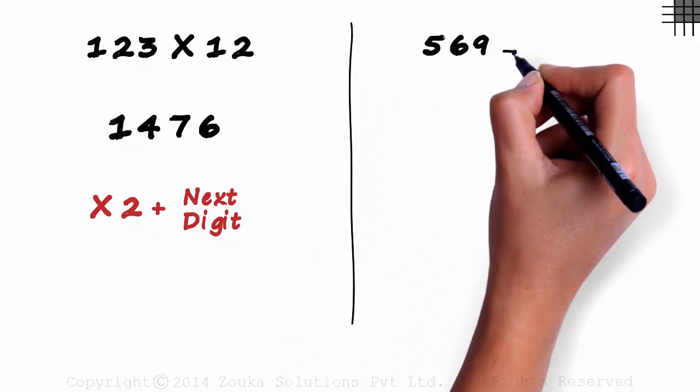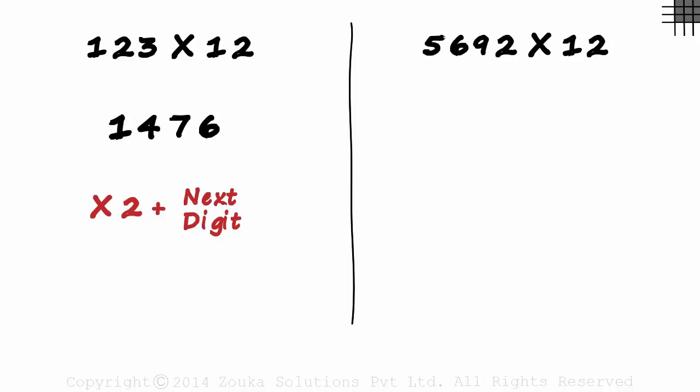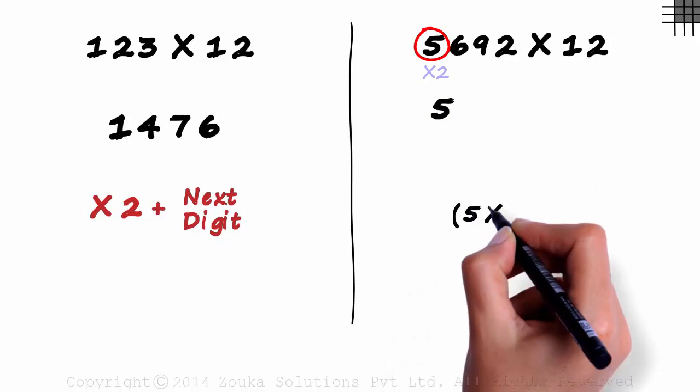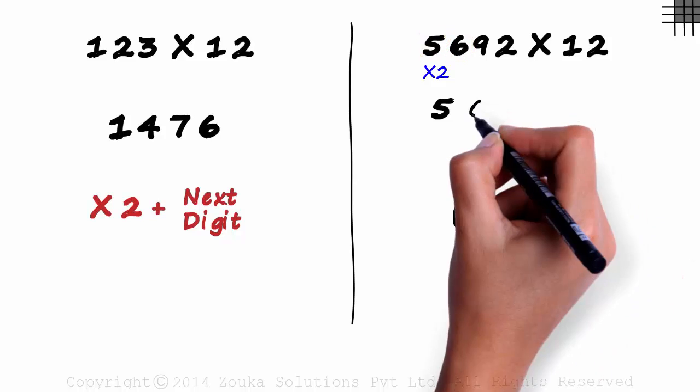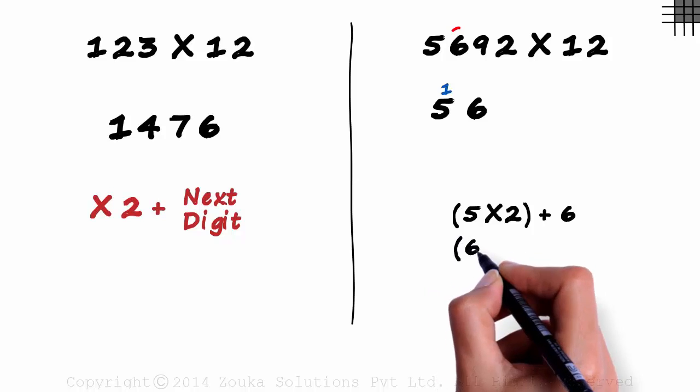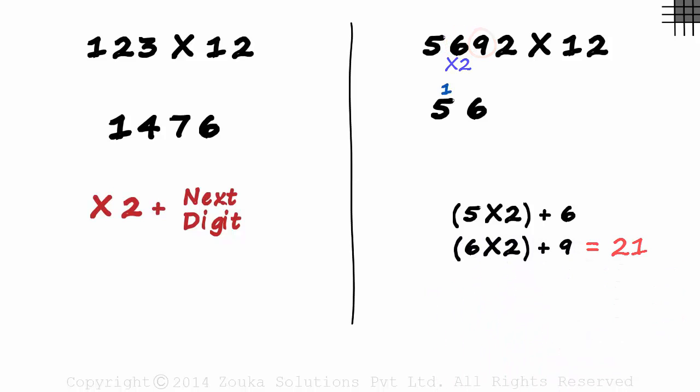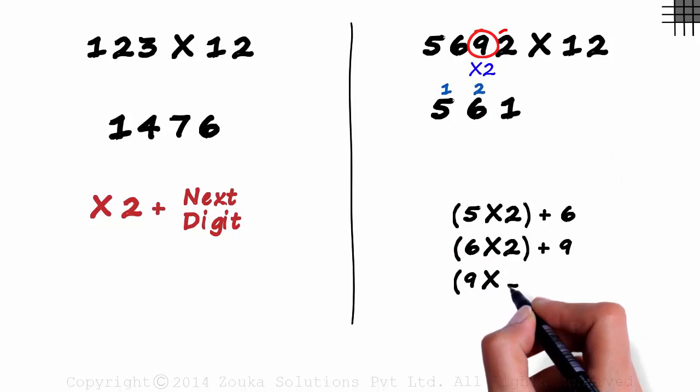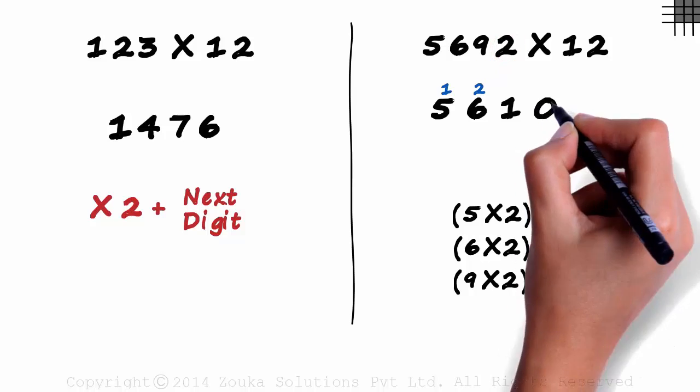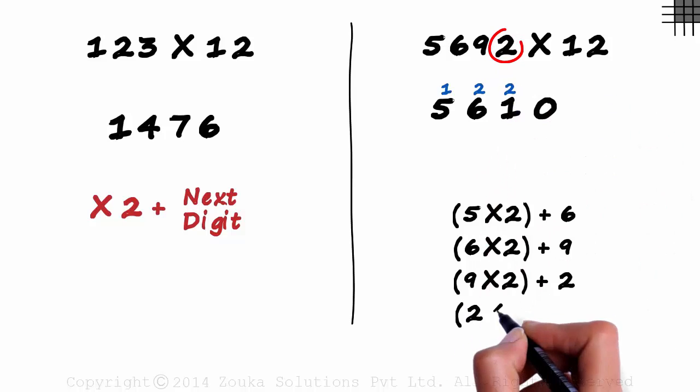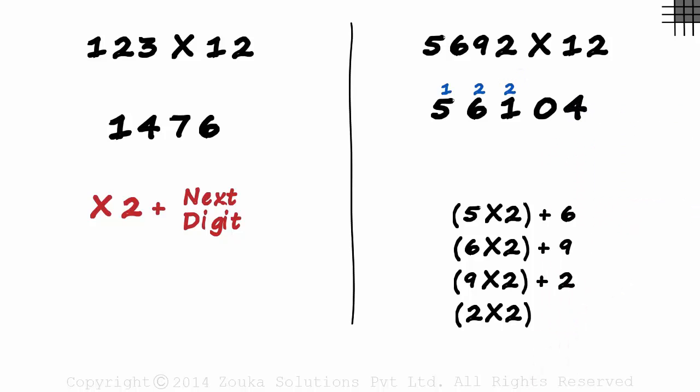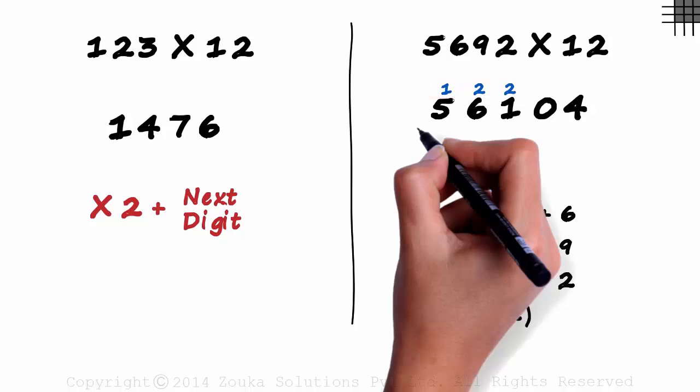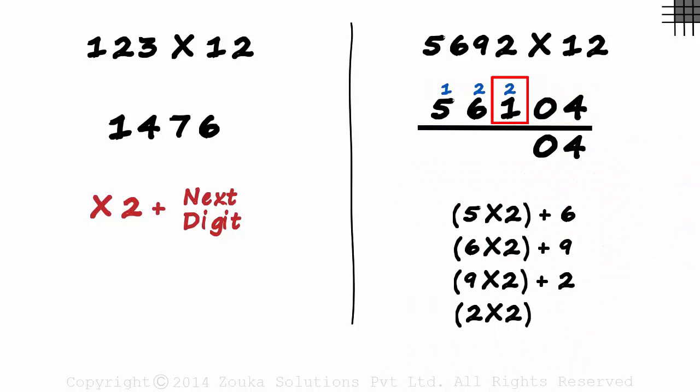What will 5692 times 12 be equal to? First digit 5 as is, then 5 times 2 plus 6, 16, 6 and a 1 carried over. Then 6 times 2 plus 9, 21, 1 and a 2 carried over. Then 9 times 2 plus 2, 20, 0 and 2 carried over. And the last digit multiplied by 2 equals 4. Don't forget to add the numbers we have carried over. 4, 0, 2 plus 1 is 3, 2 plus 6 is 8 and 1 plus 5 is 6. 68,304 is our answer.